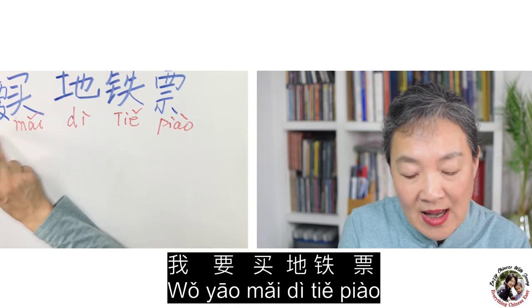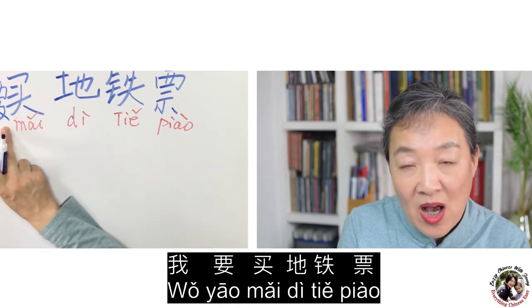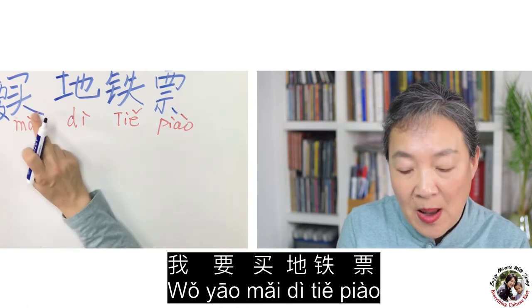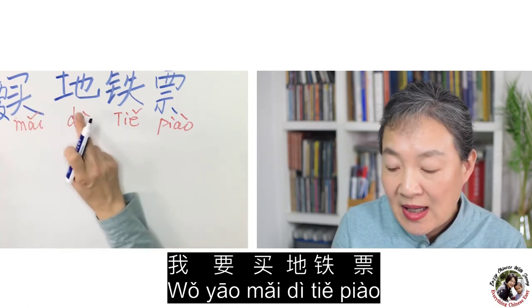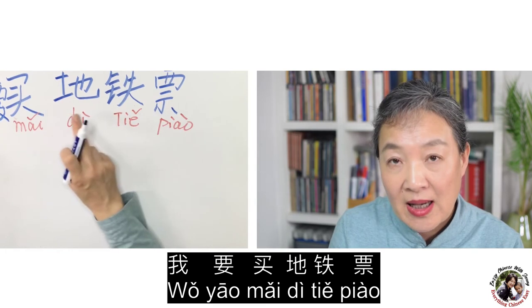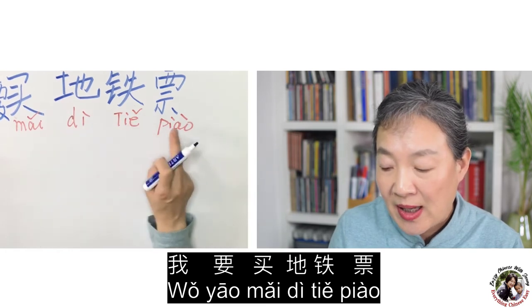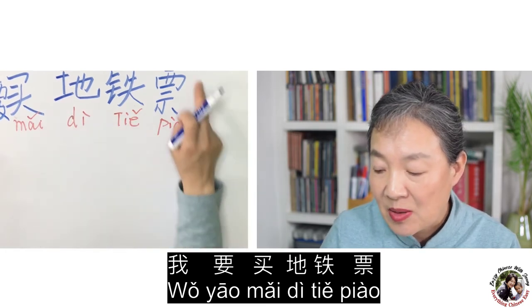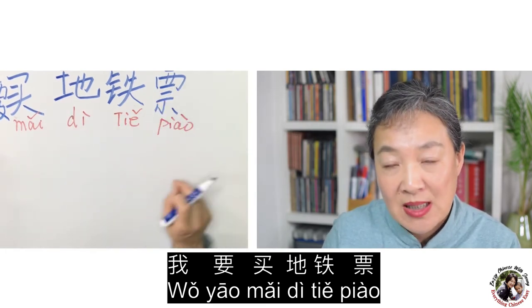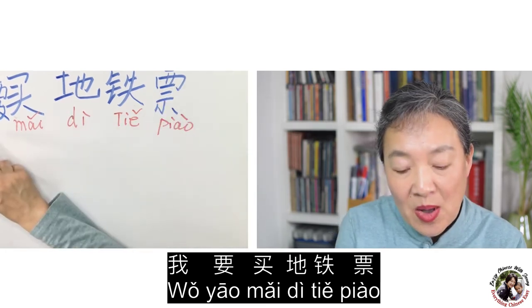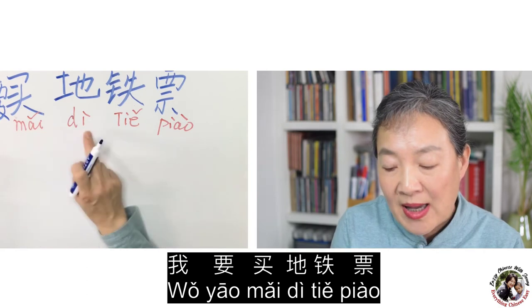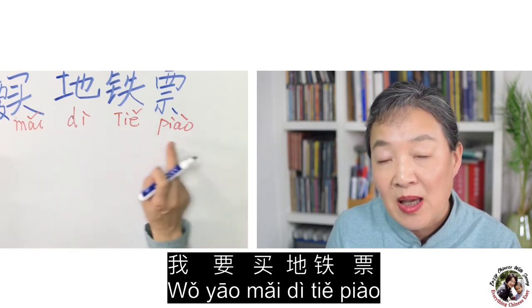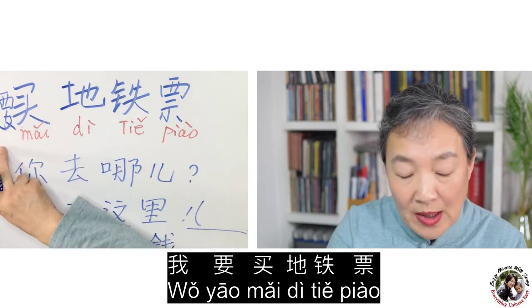我 means I, 要 means want, 买 means buy, 地铁 means subway, 票 means ticket. So 我要买地铁票 means 'I want to buy a subway ticket.'